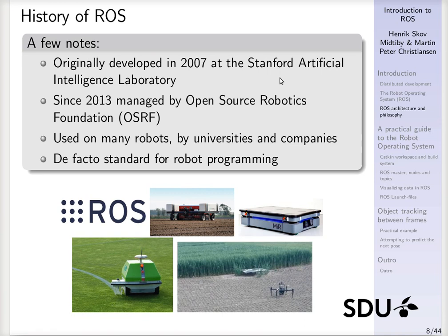There are numerous cases of where ROS has been used. A few examples from Denmark: MiR, the mobile industrial robot, is a commercial success based in Odense and was bought by a huge American company. We also have the Robotti, a field robot developed as a joint effort by the University of Southern Denmark and several different companies — now belonging to a company named AgroIntelli — which is able to drive autonomously in agricultural fields, conduct different work tasks, and is based on ROS entirely.